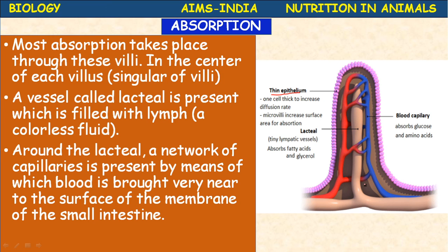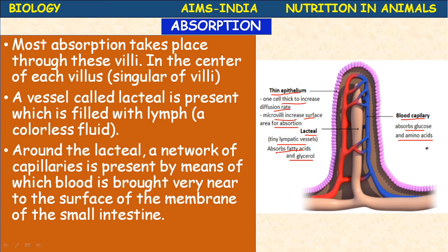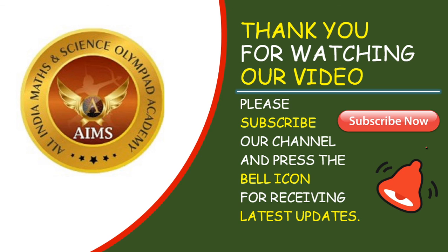A thin epithelium lining is present — this is the cross-section of a villus. Each one is called a villus; villi is the plural. A thin epithelium, one cell thick, increases the diffusion rate. Microvilli increase the surface area of absorption. The brown-colored structure in the middle is the lacteal — a tiny lymphatic vessel that absorbs fatty acids and glycerol. The villus is richly supplied with blood capillaries that absorb glucose and amino acids. So the end products are: glucose from carbohydrates, amino acids from proteins, and fatty acids and glycerol from fats — all absorbed with the help of the villi.